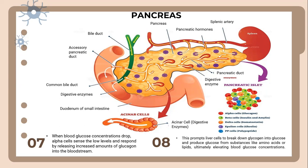When the blood glucose concentration drops, the alpha cells sense the low levels and respond by releasing increased amounts of glucagon into the bloodstream. This stimulates liver cells to break down glycogen into glucose and produce glucose from substances like amino acids or lipids, ultimately elevating blood glucose concentration back to normal.